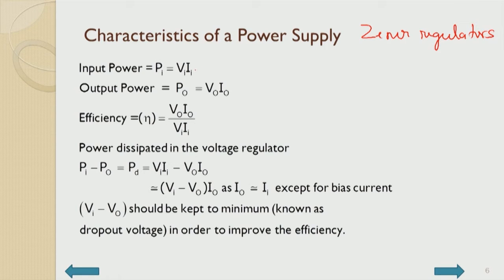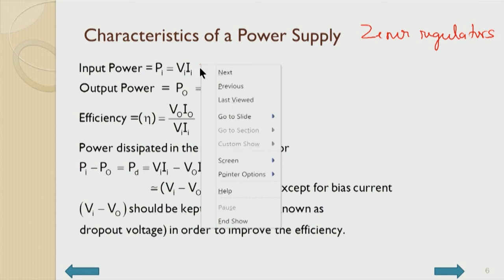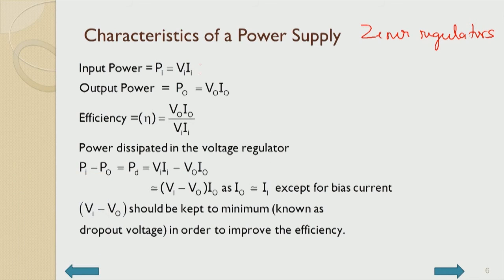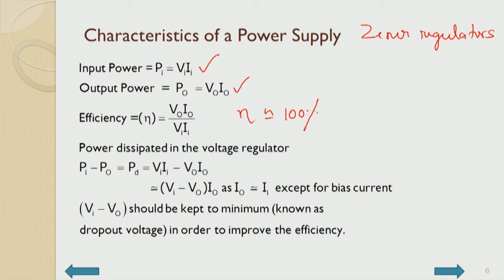The input power of the voltage regulator is input voltage times input current. Output power is V_out times I_out in the two-port network. Efficiency is output power divided by input power. We would like to design a voltage regulator such that efficiency is very close to 100%, meaning the power spent in the regulator itself should be minimal.